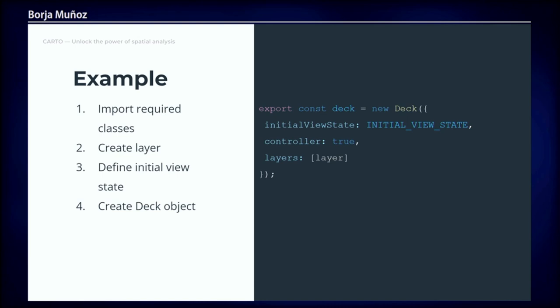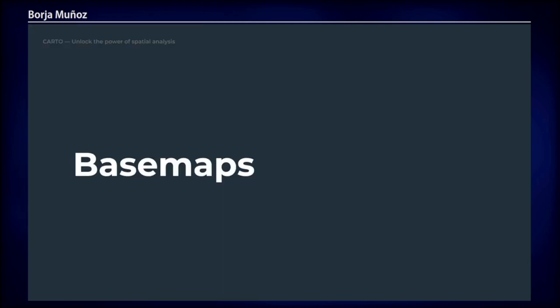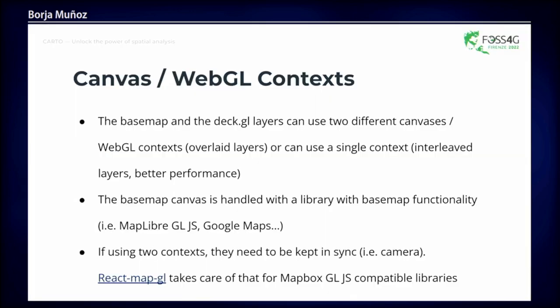A very common need in web applications is base maps. The main difference with DeckGL is that it can work in conjunction with base map libraries and is base map agnostic. You can use the tile layer to load a raster tile base map, but usually you use two different libraries: a base map library like Mapbox or Google Maps, and then draw the DeckGL layers on top.